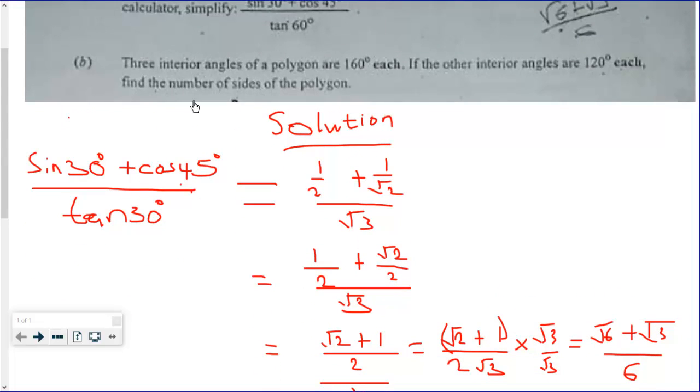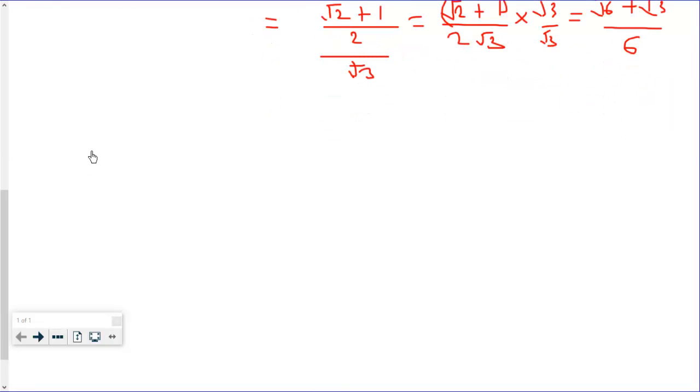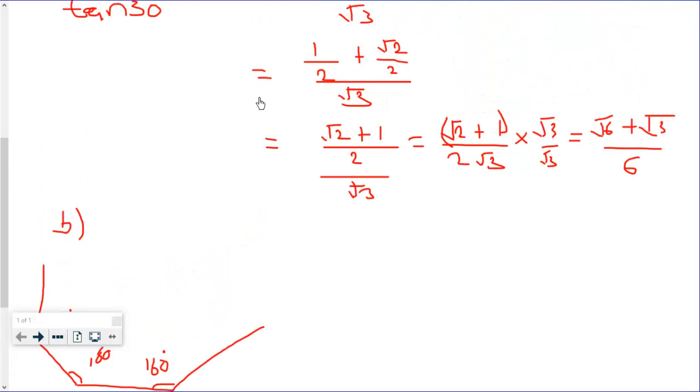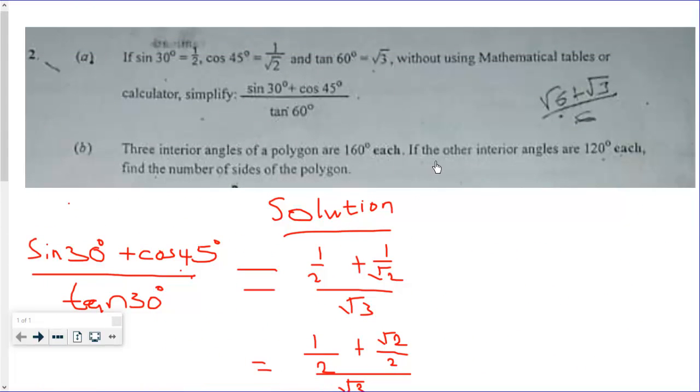Now we're doing question B. Three interior angles of a polygon are 160° each. So let this be the first one, then another 160°, then another 160°. So 160° here, another 160° here, another 160° here, then we have another 160° here.